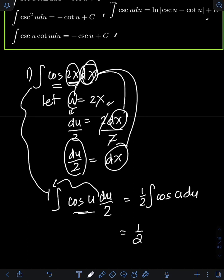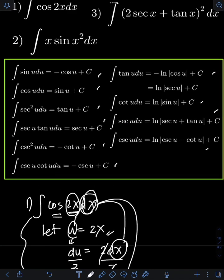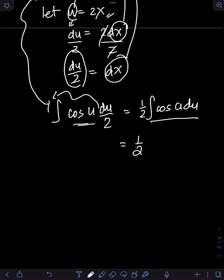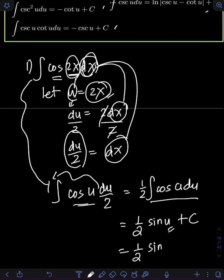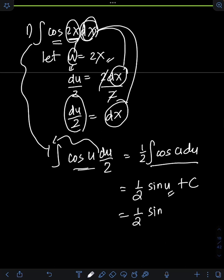So we have one-half times the integral of cosine u du. Looking at the formula, the integral of cosine u is equal to sine u plus c. So therefore, we will have one-half times sine u plus c. Don't forget to transform back u in terms of the original variable 2x, so the final answer is one-half sine 2x plus c.